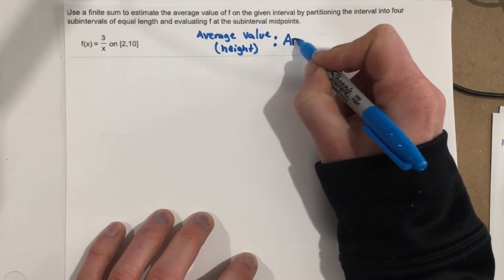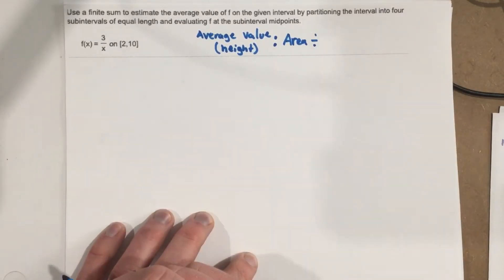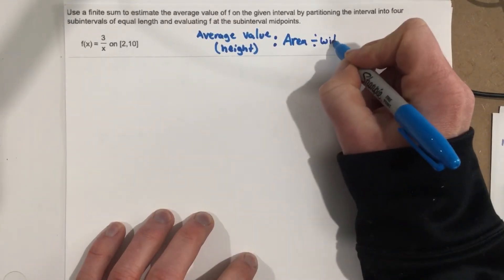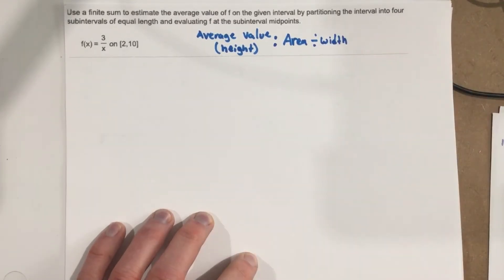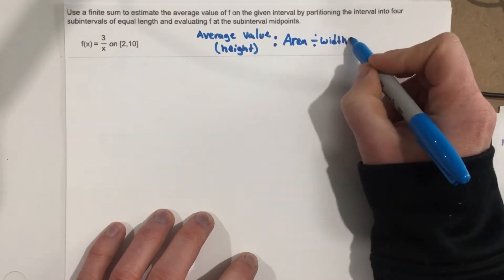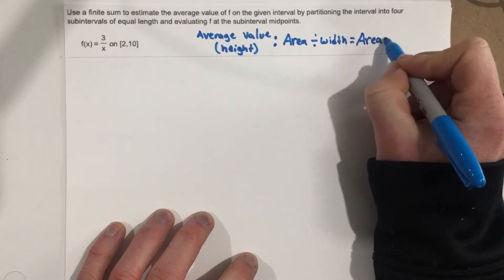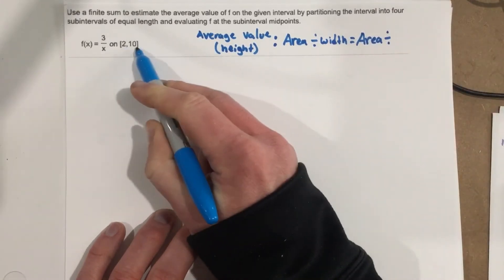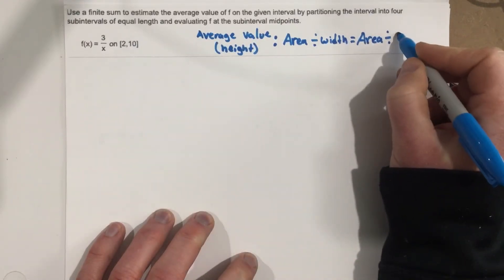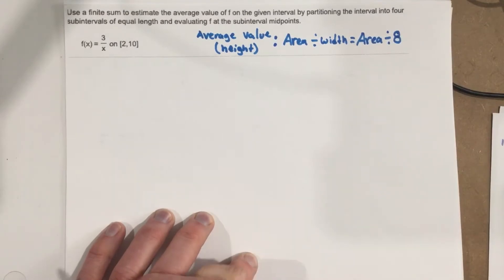We can take the area, and we can divide it by the width. So we want to find the area under the curve, essentially, and divide it by the width. We know the width is from 2 to 10. That's the width of our interval. So we're going to end up taking whatever we get for an area and dividing it by 8, and that's going to be our height, or our average value for this problem.